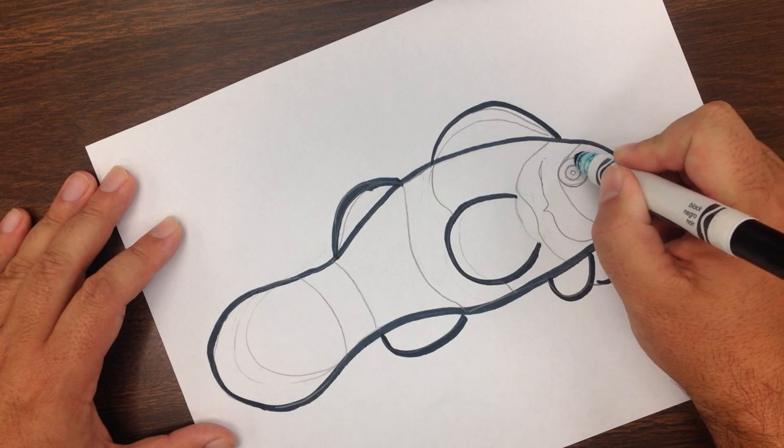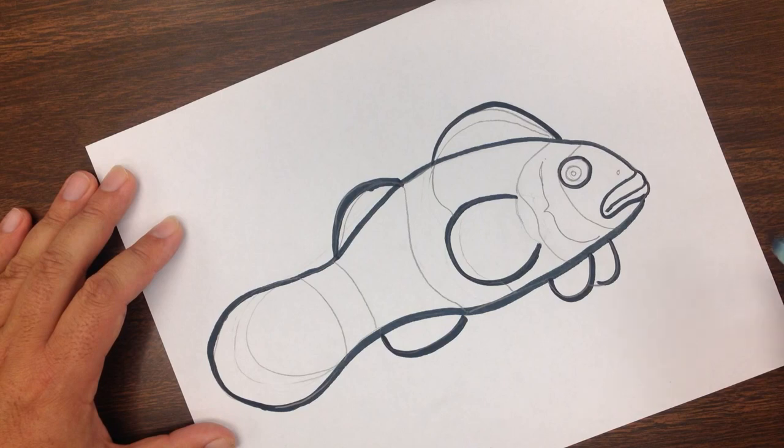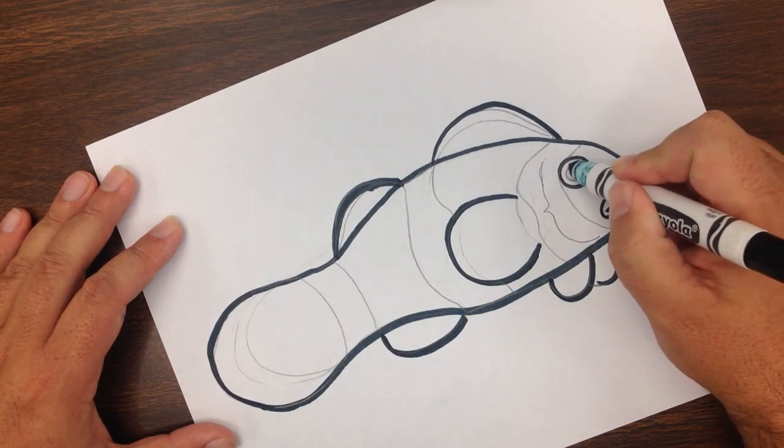Next, we'll go to the eye, which is just kind of a medium-sized circle right here. And then we'll put a smaller circle inside.